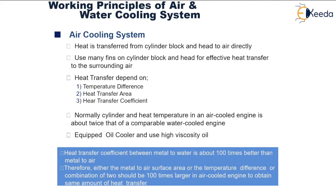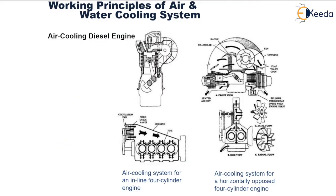These are some examples of air cooled engines. The first one on the left shows an inline four cylinder engine air cooled system, where a circulation fan is used to make a draught of air pass over the combustion chamber. A horizontally opposed four cylinder engine is also shown, where arrows depict the flow of air. Two different types of fans are used: one is the radial flow fan and the other is the axial flow fan.